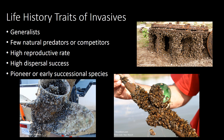Students should be familiar with the general life history traits of invasives. Most invasive species are generalists — they don't have very specific life history needs. They generally have few natural predators or competitors in their non-native environment, though they may have them in their native environment. They generally have a high reproductive rate, high dispersal success, and oftentimes they're pioneer or early successional species.